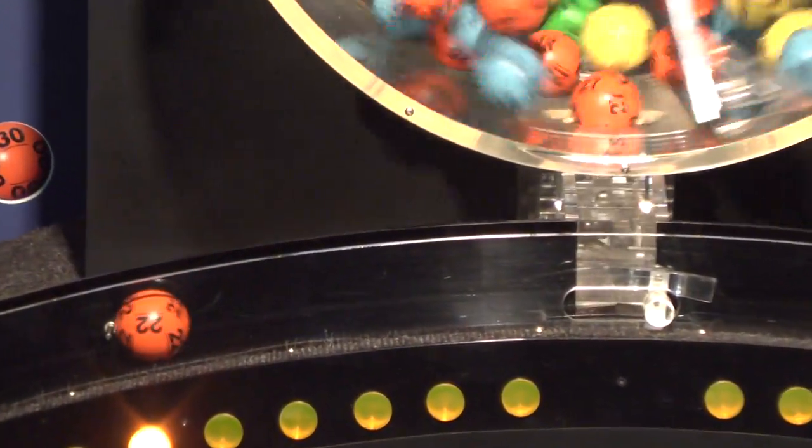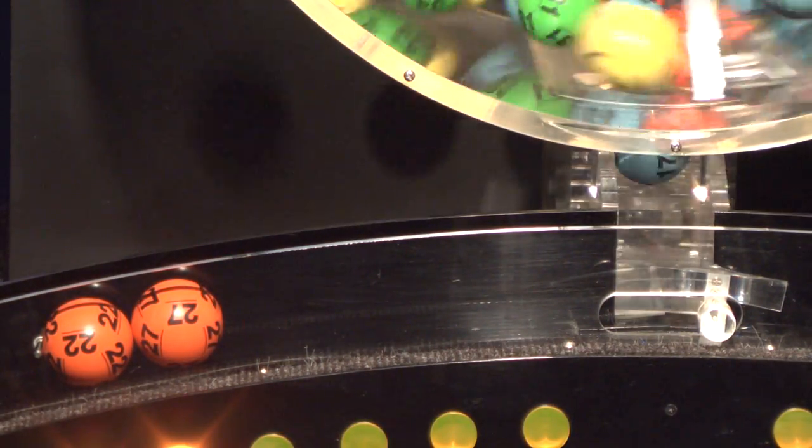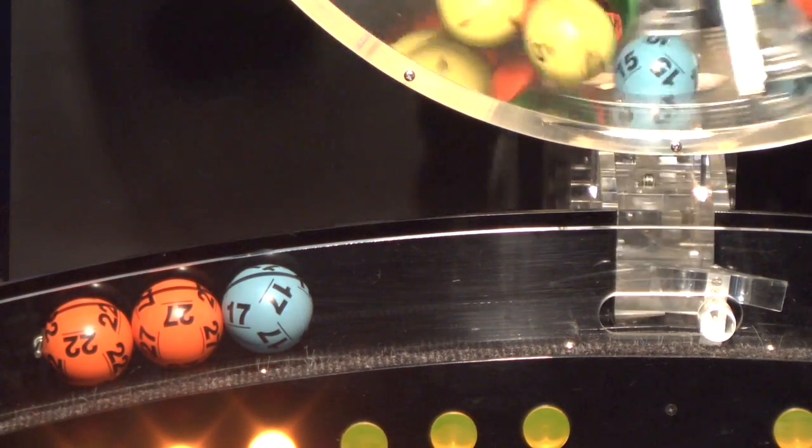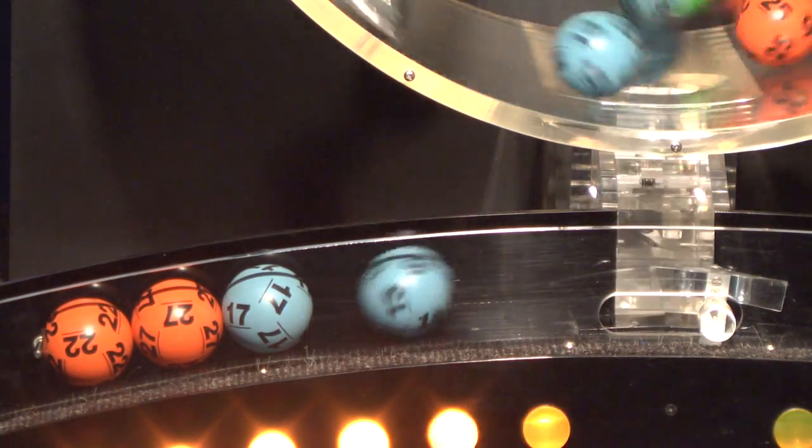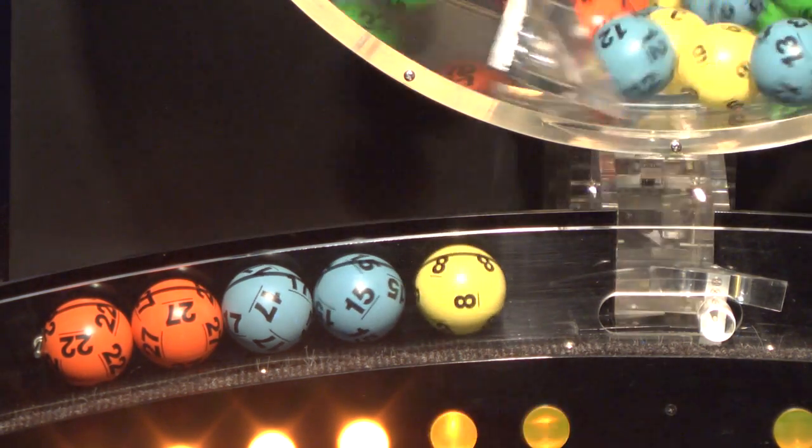Our first number is number 22. And here comes number 27. And after that we have number 17. If you've matched these three numbers, you've already won a prize. Up next is 15. And the final ball in this sequence is number 8.